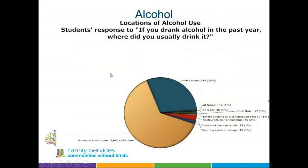Adolescents usually do drink in the home. In our biannual youth survey in Ulster County with thousands of youth, 28% said their own home and 64% said someone else's home — so over 2,000 students said someone else's home. It's a lot of drinking at home, not so much sneaking into a bar with a fake ID or going to the park. While kids are at home, there's concern about keeping track of alcohol in the house — alcohol being locked up and not going missing from the refrigerator or the garage.